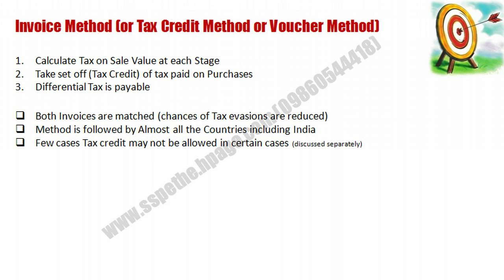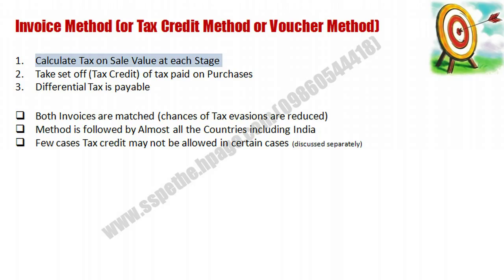After this, we will see the invoice method, commonly used by all countries including India. This is also called the tax credit method. In this method, we first calculate the tax on the sale value at each stage, and then take a set-off of the tax credit — that is, the tax paid on purchases is deducted — and finally the differential tax is what you pay to the government.